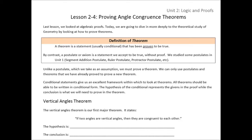Lesson 2-4. In this lesson we're going to prove our first geometric theorems. Our goal in geometry, as in all of mathematics, is to assume as few things as possible and prove as much as we can from them. Our assumptions are things that we've looked at — postulates such as the segment addition postulate and others that we saw in Unit 1.